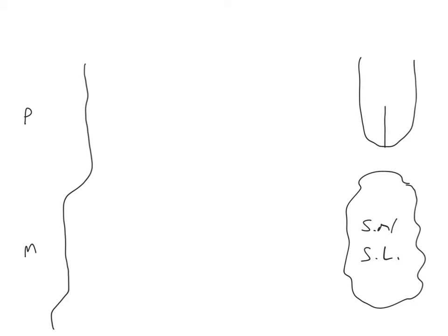Somatic sensation — basic sensations of touch — are supplied to the tongue by the trigeminal nerve. It is the mandibular branch of the trigeminal nerve, 5C, which is the relevant branch supplying somatic sensation to the tongue. It's important to note that this branch of the trigeminal nerve, as it supplies the tongue, sits very close to the submandibular and sublingual salivary glands.